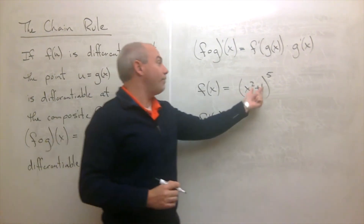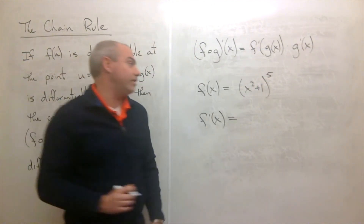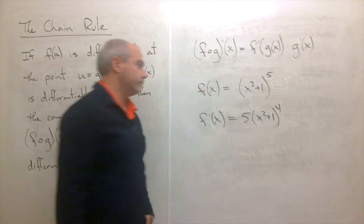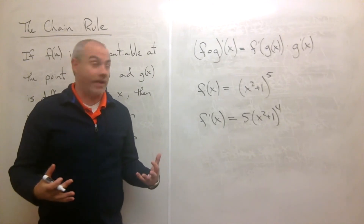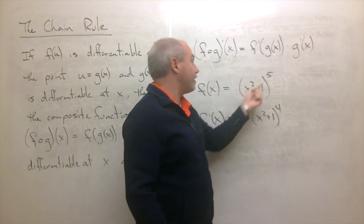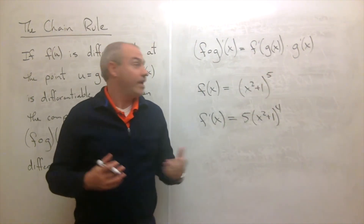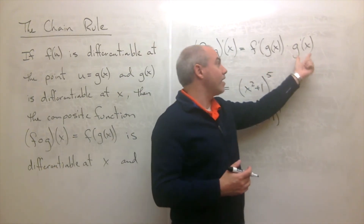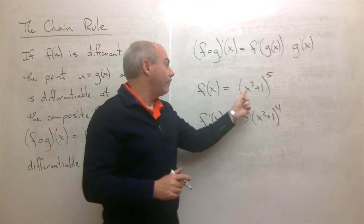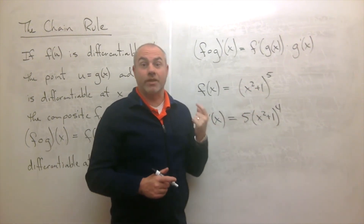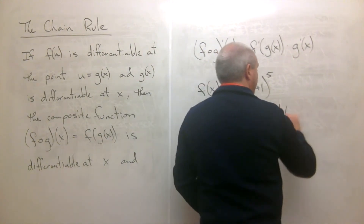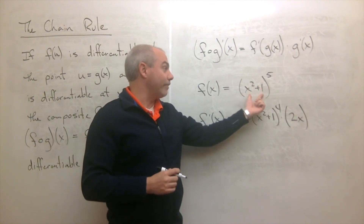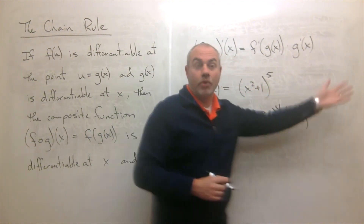By the power rule, the derivative of blob to the fifth is 5 times that blob to the fourth. That's the f prime of g of x part — taking the derivative of the outer function first, leaving the inside alone. Now I finish by multiplying by the derivative of the inside: the derivative of x² + 1 is 2x. So the full derivative is 5(x² + 1)⁴ times 2x.